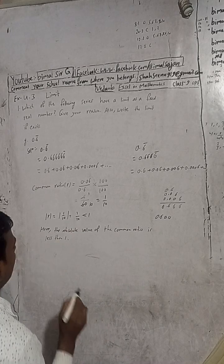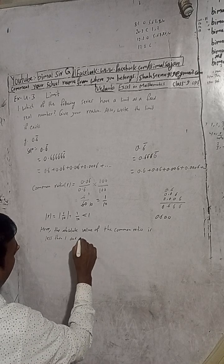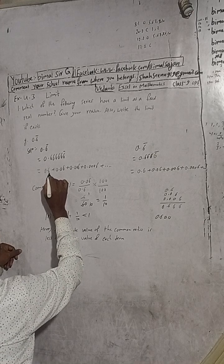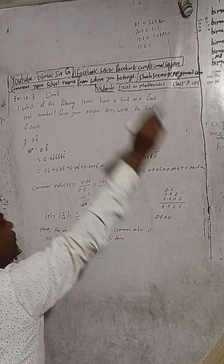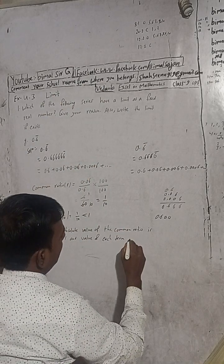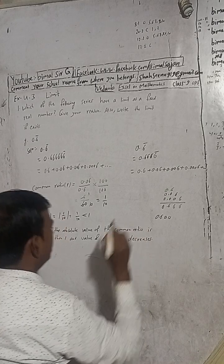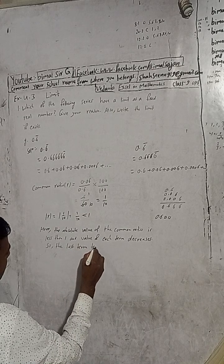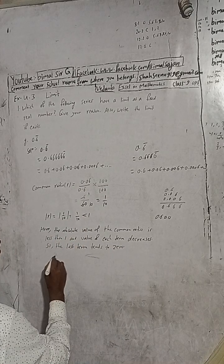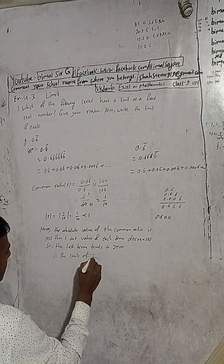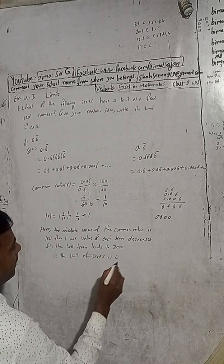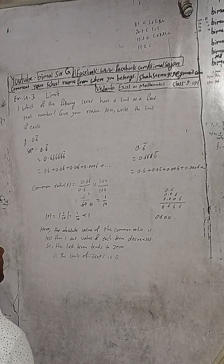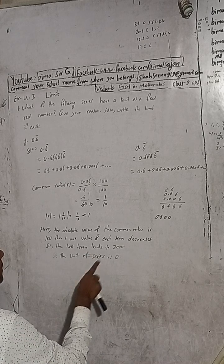The value of each term decreases as we progress through the series. Therefore, the last term tends to 0, and thus the limit of the series exists and is equal to 0.